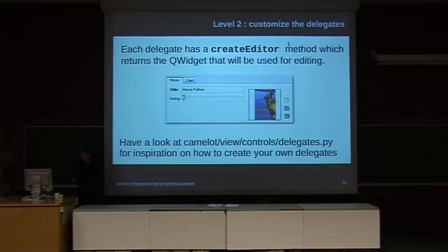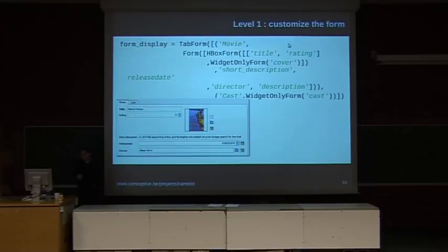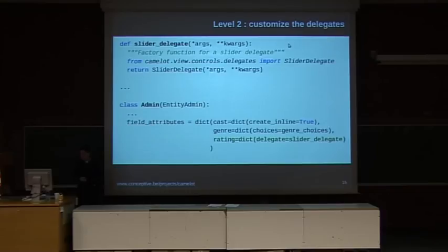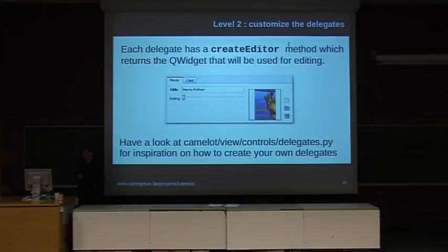Here we specified that a slider delegate should be used to visualize the rating field, and if we look at the form, we see that a slider is used to visualize the rating field. It's very easy to define your own delegates if you want to define your own editors. You can program them in PyQt and then put your own delegates in there. For example, the ratings could be stars or something like that.